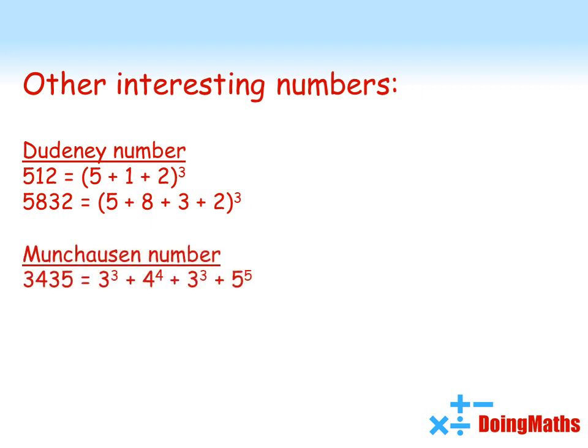You can have a Munchausen number. Now there's only one of these that exists. These are where you take each digit and raise it to the power of that digit. So the first three in 3,435, you raise to the power of 3. The 4, you raise to the power of 4, and so on. This is the only number that meets that criteria.